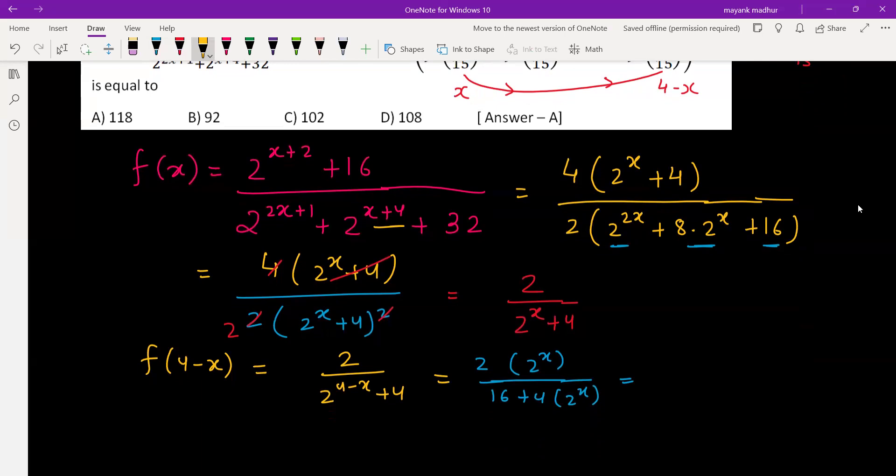So when you cancel by 4, what will you get? You will get it as 2 raised to x divided by 2 times... we're canceling 2 first, so 8 and 2. We are taking 2 common, so 4 plus 2 raised to x.